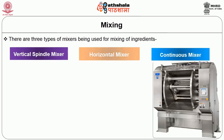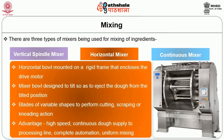The horizontal mixer features a horizontal bowl mounted on a rigid frame that encloses the drive motor. The mixer bowl is designed to tilt so as to eject the dough from the tilted position. Blades of variable shapes perform cutting, scraping, or kneading actions. The advantages of the horizontal mixer include high speed, continuous dough supply to the processing line, complete automation, and uniform mixing.